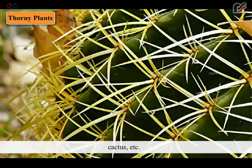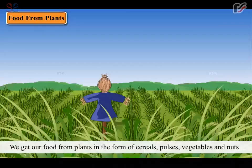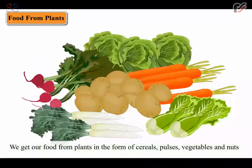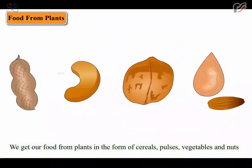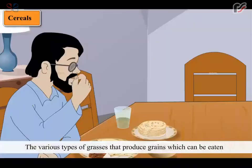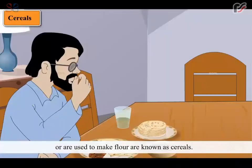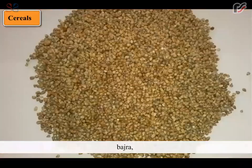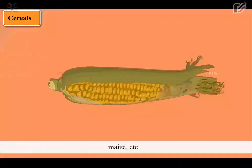We get our food from plants in the form of cereals, pulses, vegetables and nuts. The various types of grasses that produce grains which can be eaten or are used to make flour are known as cereals. For example, rice, wheat, bajra, maize, etc.